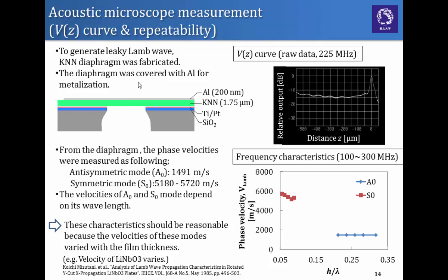And we also performed frequency characterization experiments with changing measurement frequency from 100 to 300 megahertz. This is the result of the phase velocities which we obtained from this research. The antisymmetric mode and the symmetric mode are measured as following. You can see the velocities of A0 and S0 mode are different and depend on wavelength. These characteristics should be reasonable because the velocities change with film thickness.